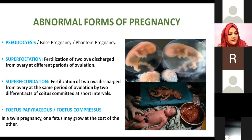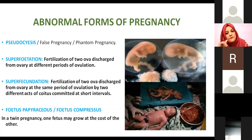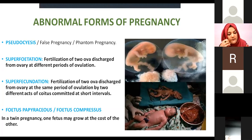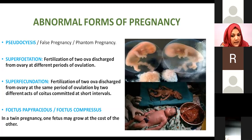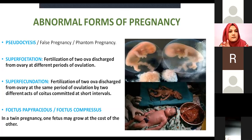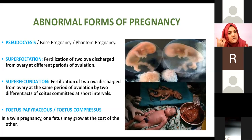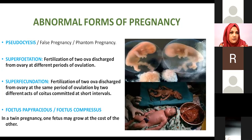Fetus papyraceus and fetus compressus relate to twin pregnancy where one fetus outgrows the other. One child has normal growth at the time of birth, while the other child is compromised — it can have a papery-like or mummified appearance, or become compressed with the other fetus. This is also known as vanishing twin syndrome, where one twin vanishes by the end of the pregnancy.